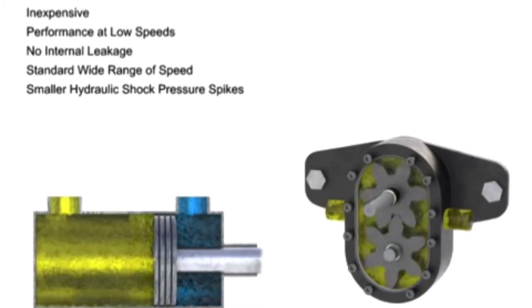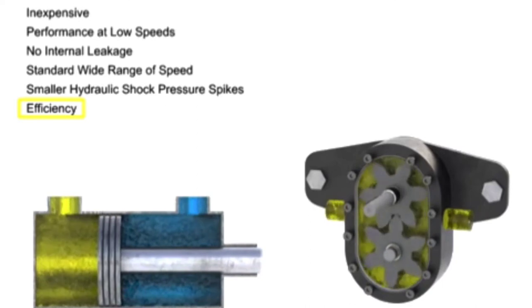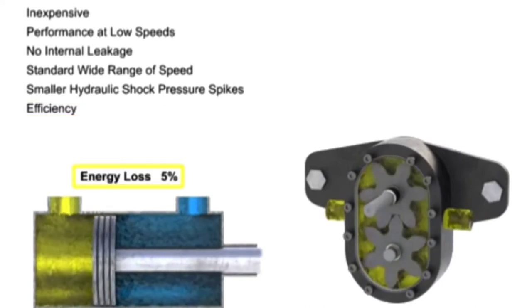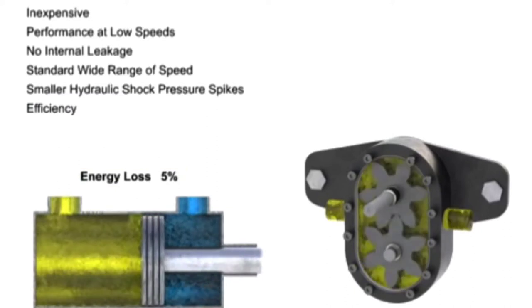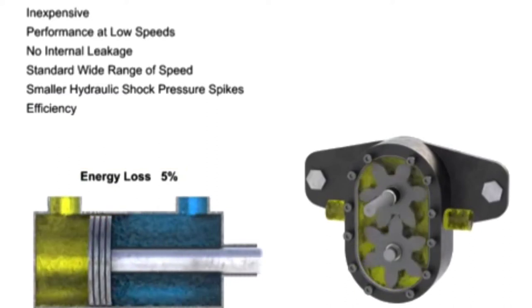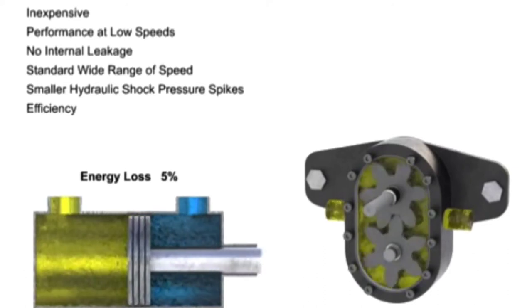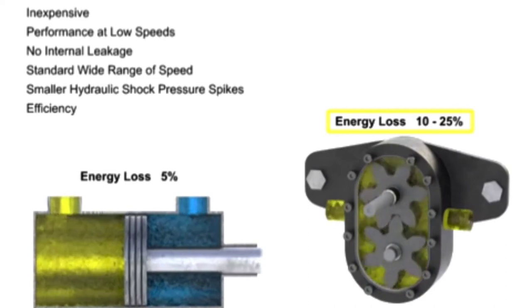Finally, cylinders are much more efficient than the typical fluid motor. Energy loss can be held to about 5% in a well-constructed cylinder. But fluid motors, or pumps, experience power losses from fluid leakage and friction within the device. These losses can be anywhere from 10% to 25% of the input power.